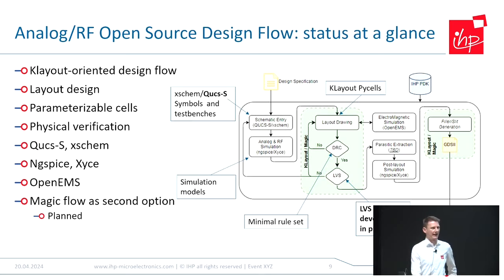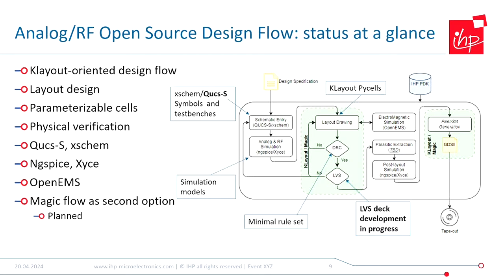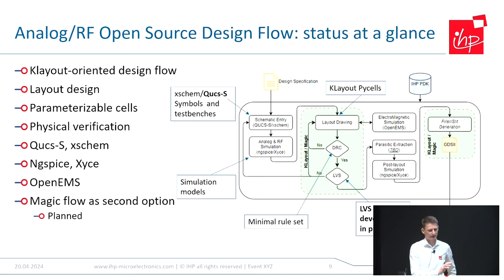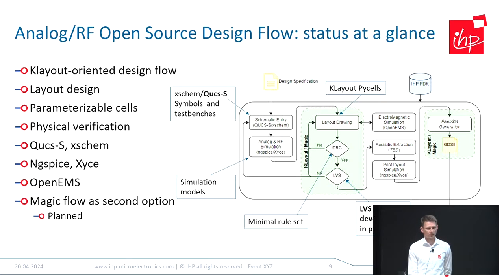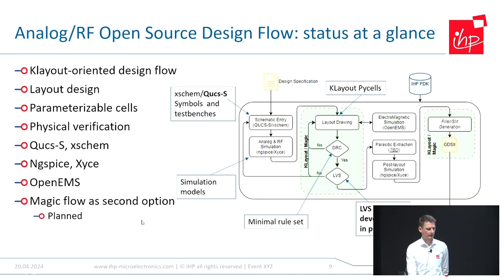Here is an overview of how to design an analog device. I won't go into all the details, but you can see it's a KLayout-oriented design flow. You can use parametrizable cells and physical verification. We have support for KLayout, Xschem, and also for NGSpice and SPICE for simulation. On the right side you see our vision for how to design an analog ASIC with our PDK. And last but not least, a Magic-based flow as a second option is currently planned.